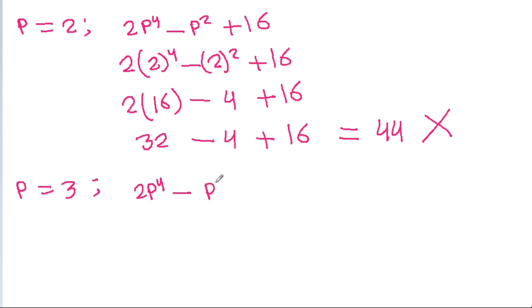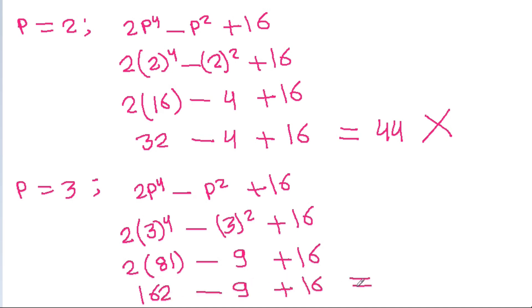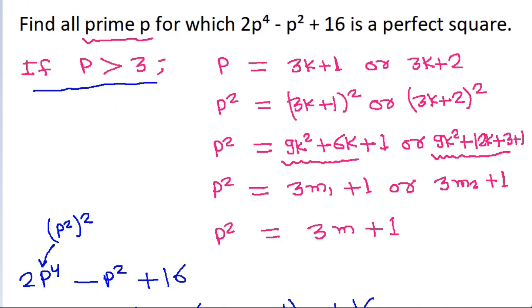For p = 3: 2(3⁴) - 3² + 16 = 2(81) - 9 + 16 = 162 - 9 + 16 = 169, and 169 = 13². So it is a perfect square. Therefore, p = 3 is the only solution to this problem.